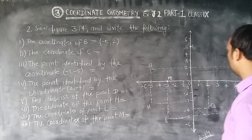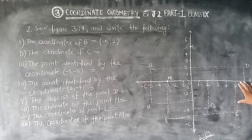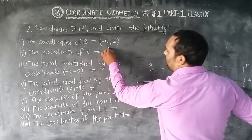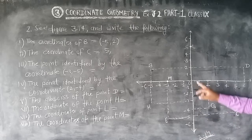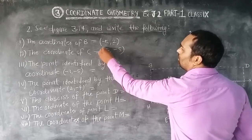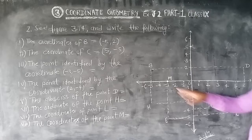Now second: the coordinate of point C. Looking at where the line touches the x-axis — it touches at plus 5, so x equals 5. And the y line touches at minus 5, so y equals minus 5. Therefore the coordinate of C is (5, minus 5).